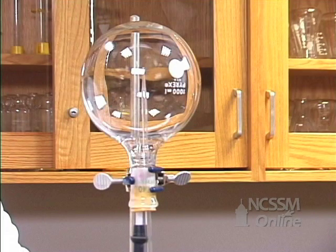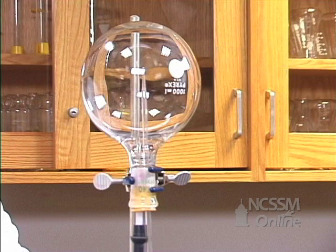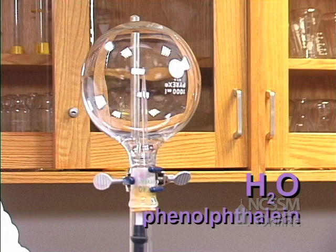We filled a one liter round bottom flask with ammonia gas. We're going to put in a medicine dropper that's sealed with a little bit of grease. The medicine dropper contains a small amount of water and phenolphthalein, which is an acid-base indicator.